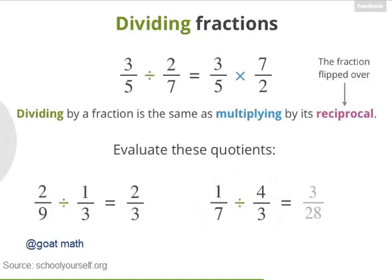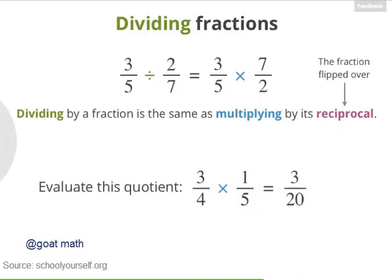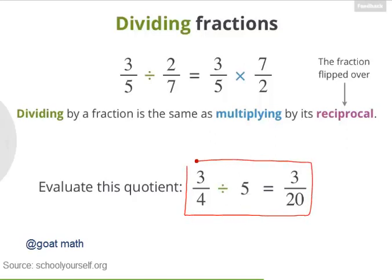Now let's say you're dividing a fraction by a whole number, like 3 fourths divided by 5. Well, you can still use this rule about reciprocals if you remember that 5 is the same thing as 5 divided by 1. So to divide these fractions, you can flip 5 over 1, making it 1 over 5, and then multiply. 3 fourths times 1 fifth is 3 twentieths. So that's the answer: 3 fourths divided by 5 equals 3 twentieths.